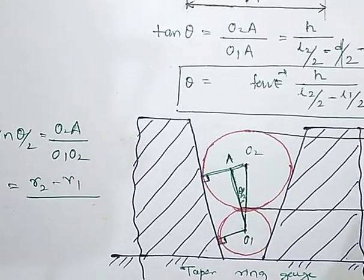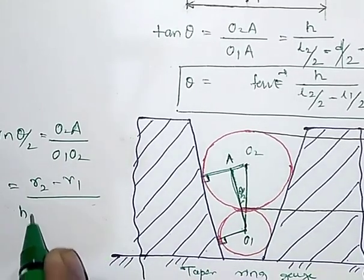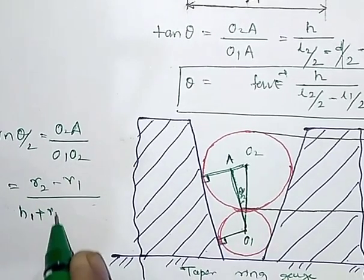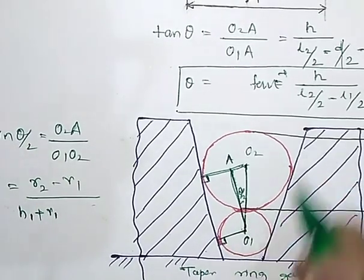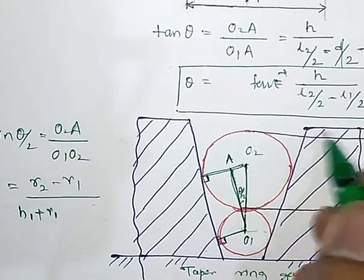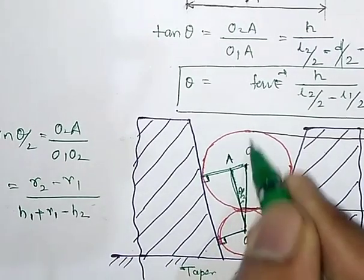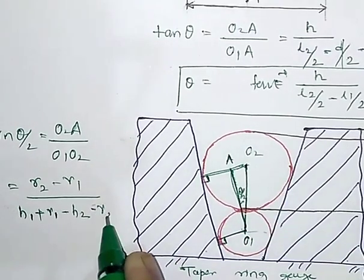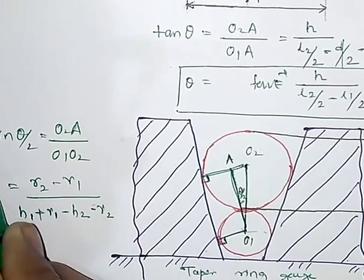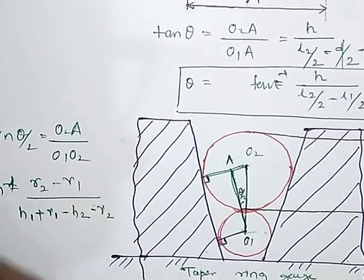So we have distance H1 plus radius R1. So we have this total distance. But we want O1 to O2, so subtract H2, minus H2, and subtract R2, minus R2. So here we got a formula: theta by 2 is equal to sine inverse of this formula.